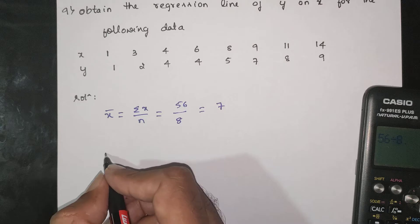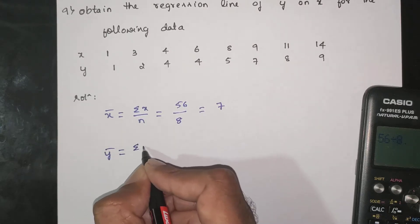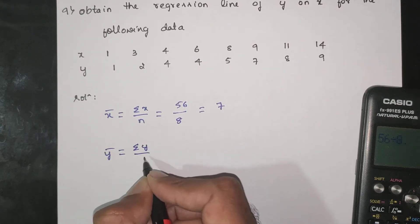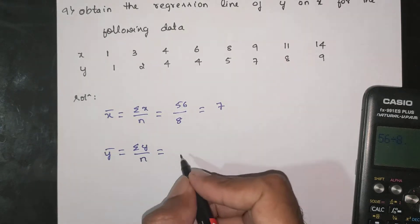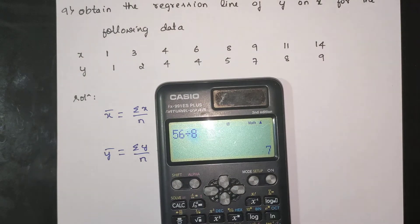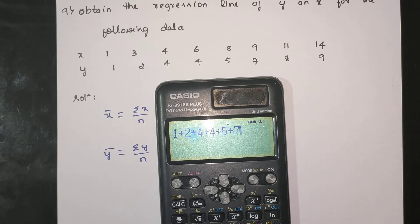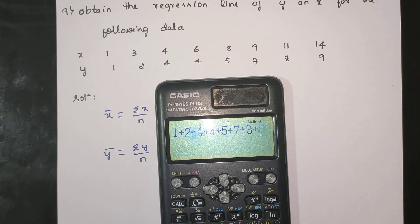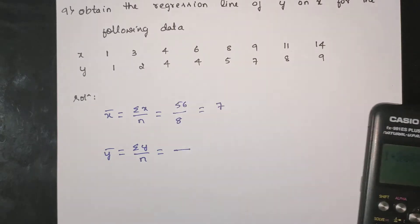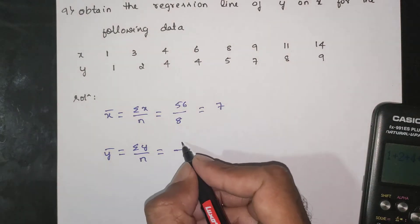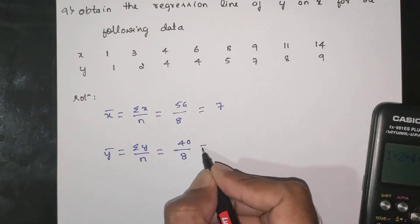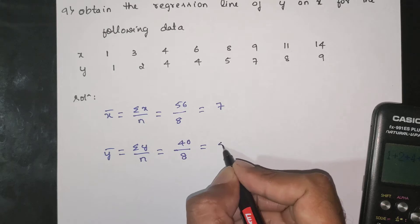Next, find ȳ. The formula for ȳ is summation of y divided by n. Summation of y: 1 + 2 + 4 + 4 + 5 + 6 + 7 + 8 = 40. n = 8. So ȳ = 40 divided by 8 = 5.